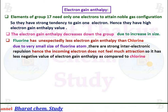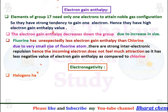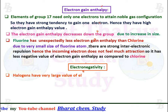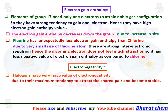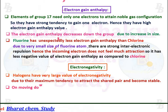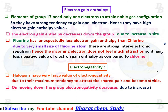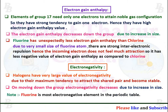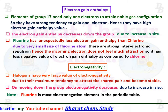In Chlorine, there is no such inter-electronic repulsion. Electronegativity: halogens have very high electronegativity values due to their maximum tendency to attract the shared pair of electrons and become stable. On moving down the group, electronegativity decreases due to increase in size. Note: Fluorine is the most electronegative element in the periodic table.